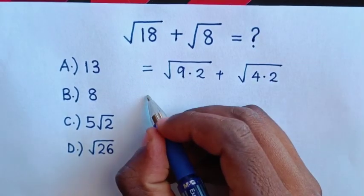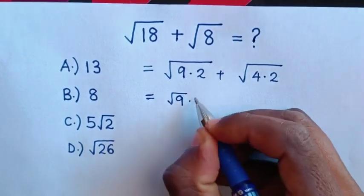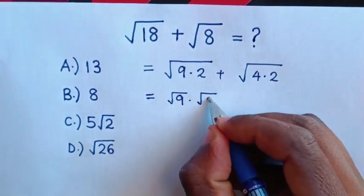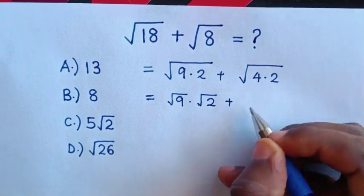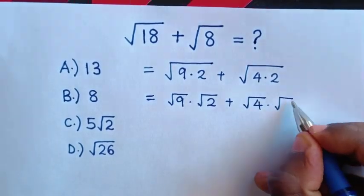This will be equal to square root of 9 times square root of 2, plus square root of 4 times square root of 2.